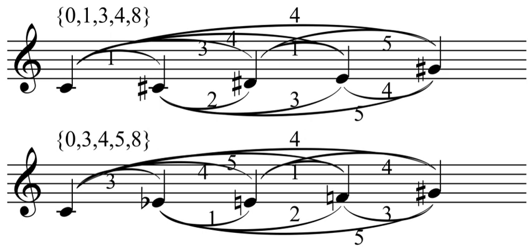Transpositionally symmetrical sets either divide the octave evenly, or can be written as the union of equally sized sets that themselves divide the octave evenly. Inversionally symmetrical chords are invariant under reflections in pitch class space. This means that the chords can be ordered cyclically so that the series of intervals between successive notes is the same read forward or backward.